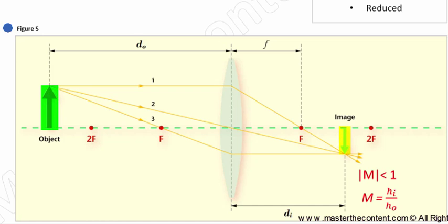Lastly, relative to the object, the image is reduced in size. That means, then, the magnification number has an absolute value that is less than one. Recall, magnification is simply the ratio of image height to object height.